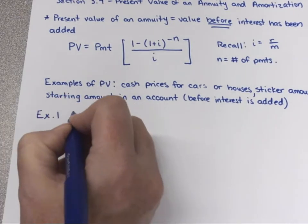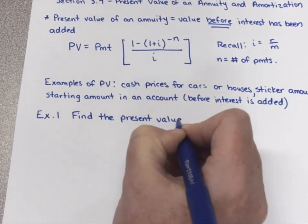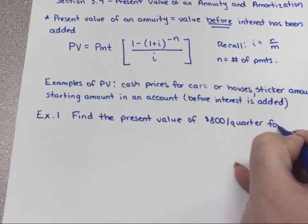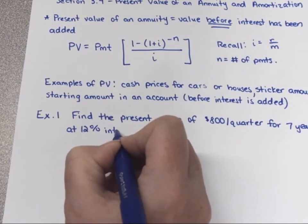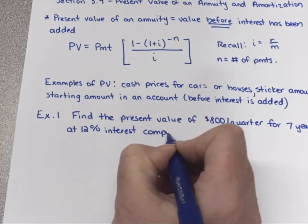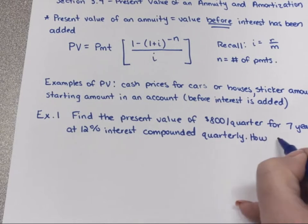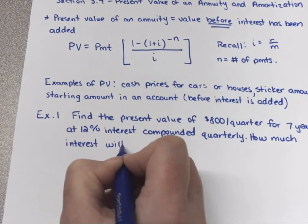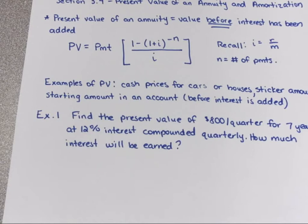Let's look at an example and punch this into our calculator. Find the present value of $800 a quarter for seven years at 12% interest compounded quarterly, and then find how much interest will be earned. The phrase 'will be' is significant because the interest hasn't been added yet — we're figuring the amount before interest has been added.